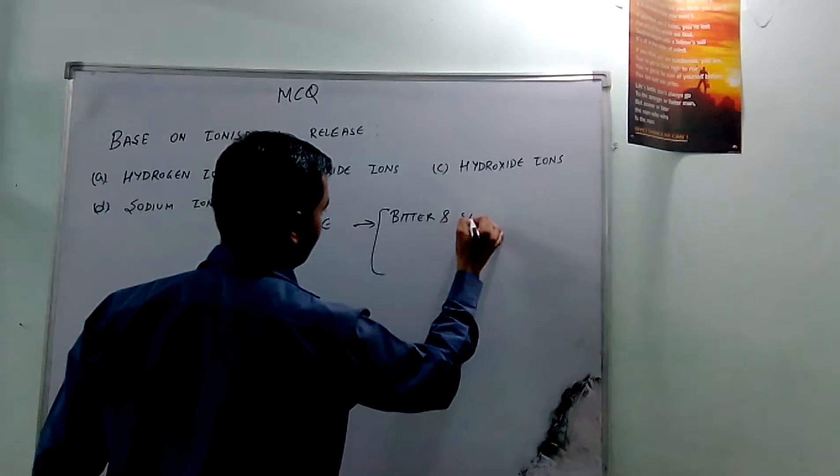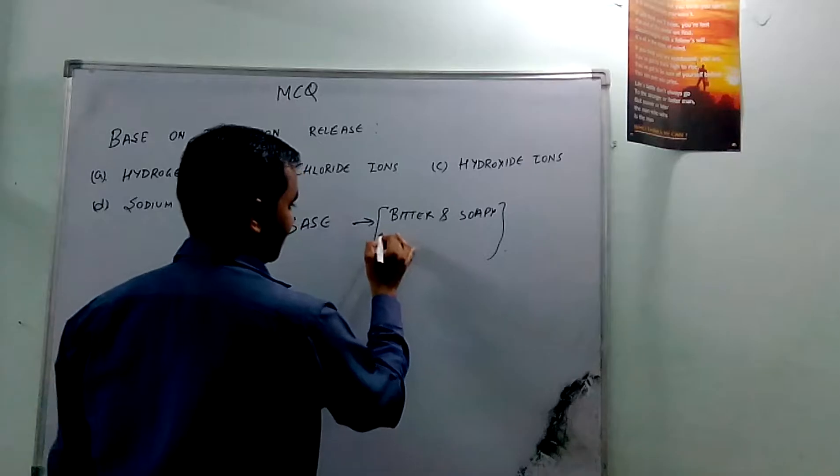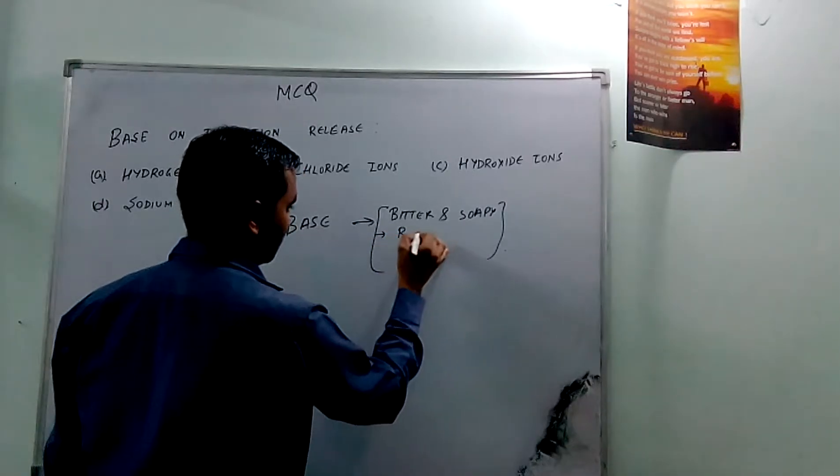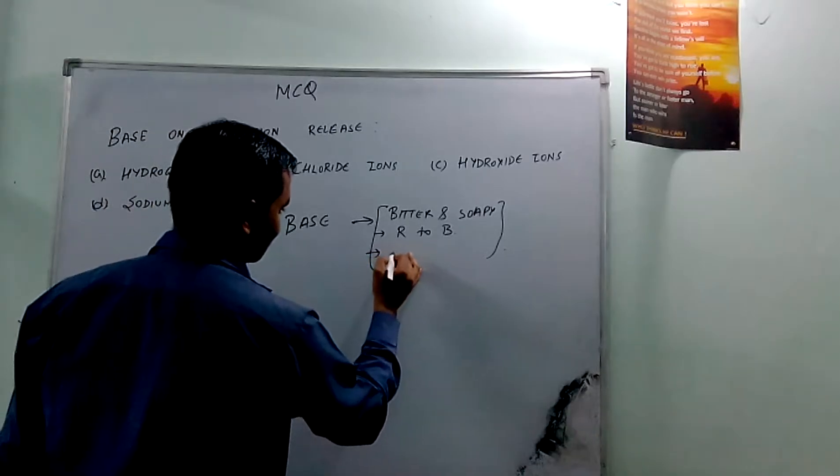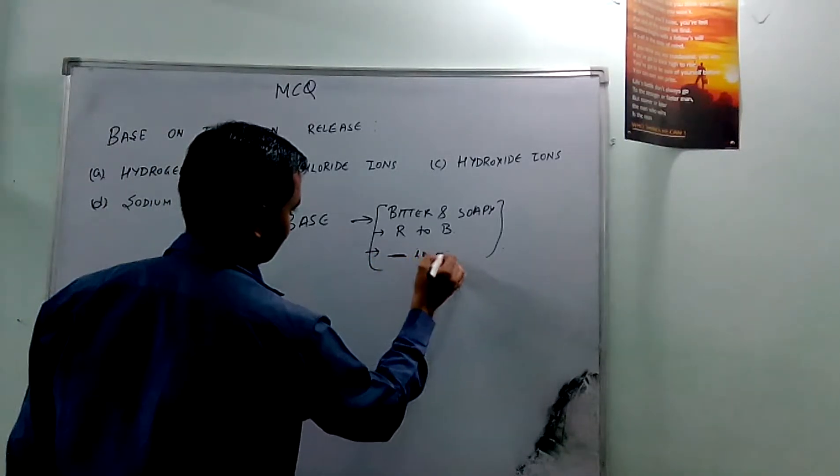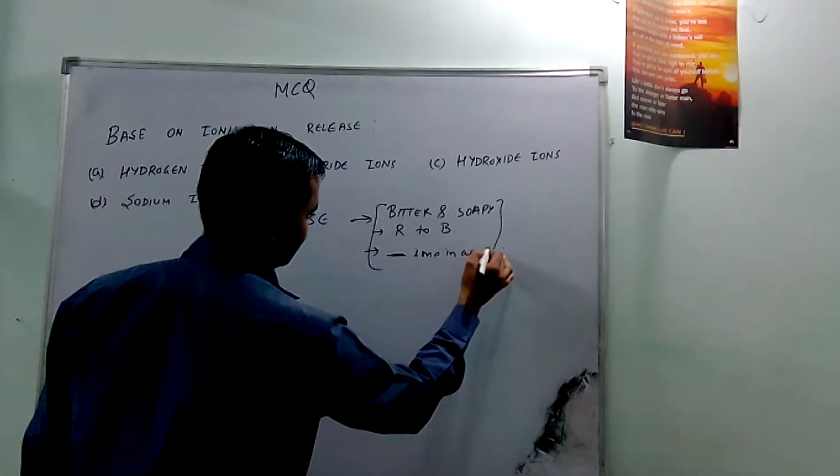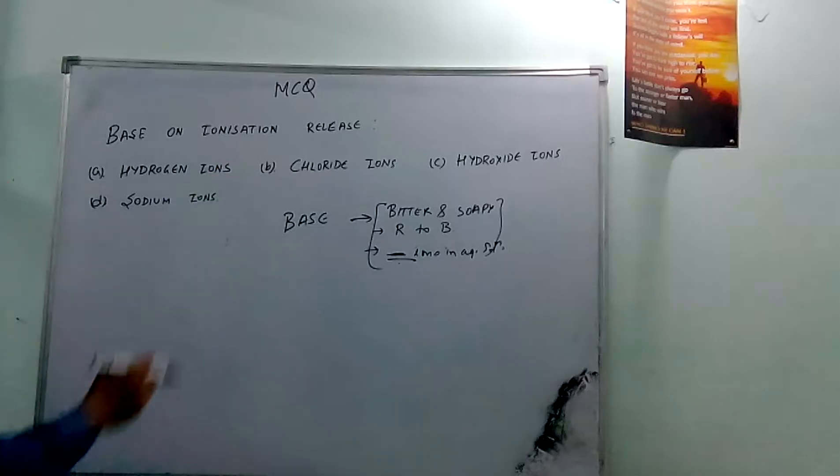It's soapy in touch. The second thing is for litmus paper test, it converts red to blue. And third is it produces dash ions in aqueous solution. Why it is dash? Because this is what we want to find from the options.